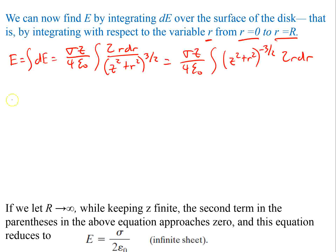So we can go ahead and do the integral. It's going to be equal to 2 times sigma z divided by 4 epsilon naught. I'll tell you in a second where that 2 came from. And then on the inside, it's just going to be negative 1 divided by the square root of z squared plus r squared. This is going to be big R squared. And it's going to be from 0 to R.